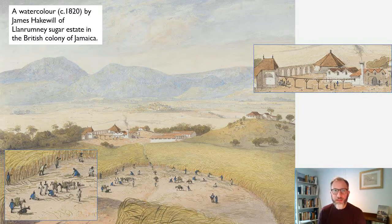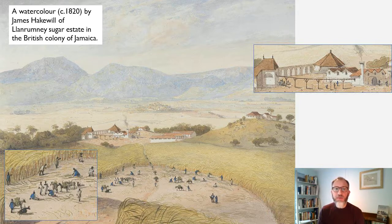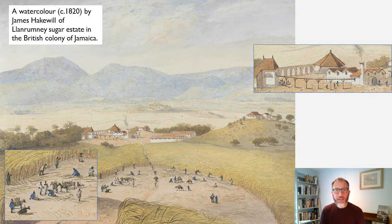You can see in the foreground enslaved people working in the fields on the sugar crop. They're harvesting it and loading it onto mules or donkeys and taking it up that central path towards the works buildings in the middle of the picture, where that sugar will be processed and made ready for export from the plantation across the Atlantic to market in Britain.